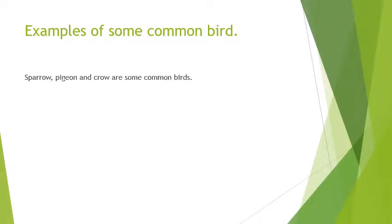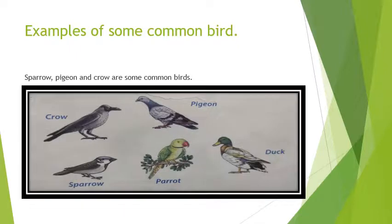Now we will see some examples of the common birds. We have some common birds like sparrow, pigeon, and crow, parrot, duck. All these are the common birds. We can see them in our daily life. They have beak, they have two legs. So this thing is common in them.